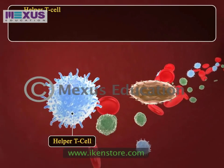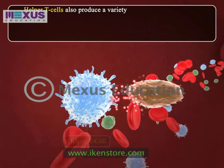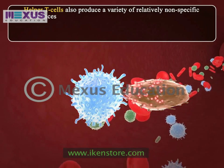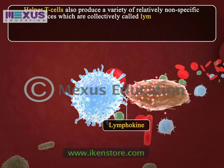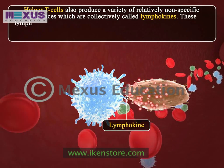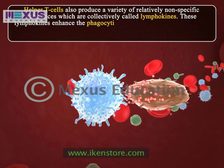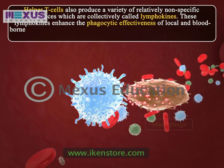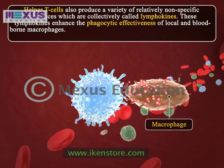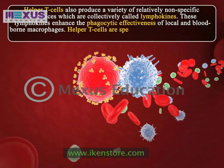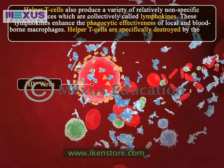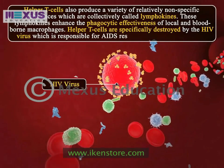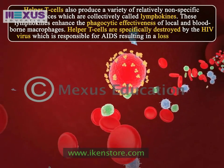Helper T cells also produce a variety of relatively non-specific substances collectively called lymphokines. These lymphokines enhance the phagocytic effectiveness of local and blood-borne macrophages. Helper T cells are specifically destroyed by the HIV virus, which is responsible for AIDS, resulting in a loss of immunity.